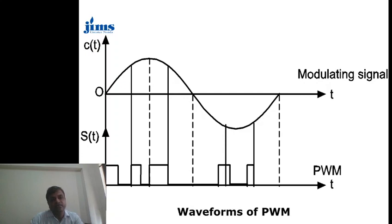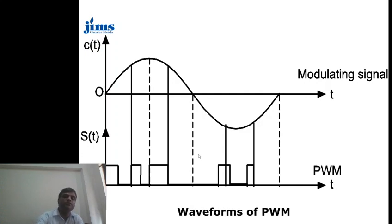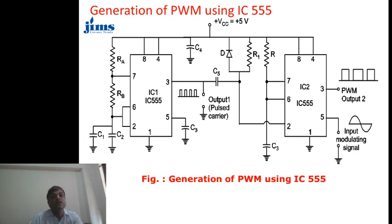Looking at this circuit, I also need to draw the sawtooth waveform to make it clear how we get the varying width. Here the width of this pulse is large compared to this pulse — comparing the widths, this one is larger, this one is smaller. These lines are drawn on the basis of the sawtooth waveform used in the circuit, and on this basis we convert the modulating signal into a pulse width modulated waveform.